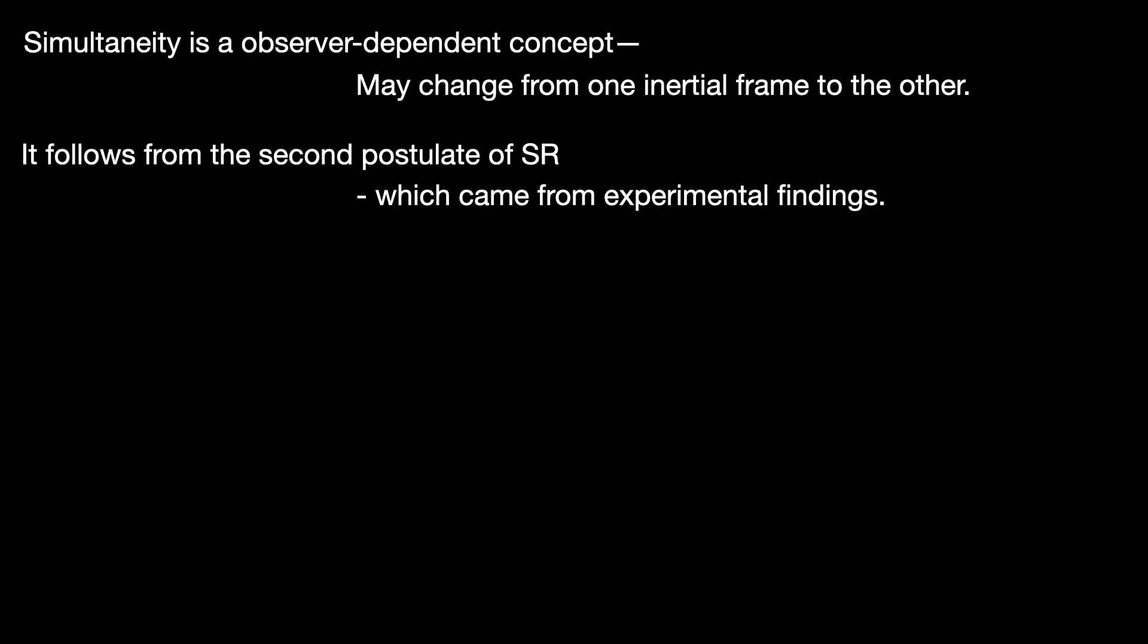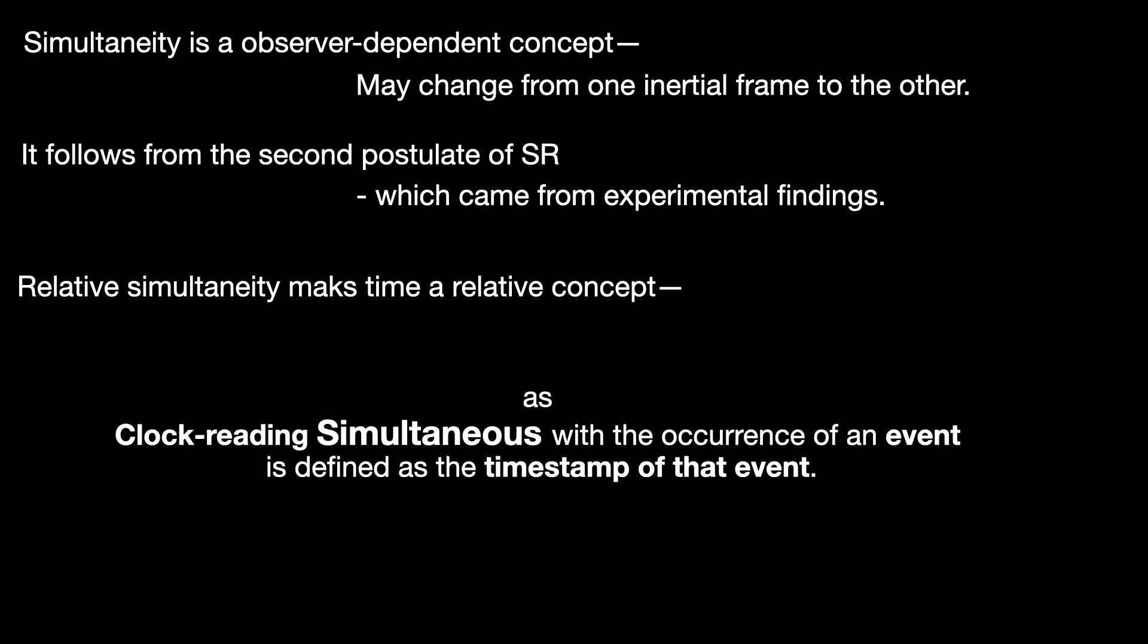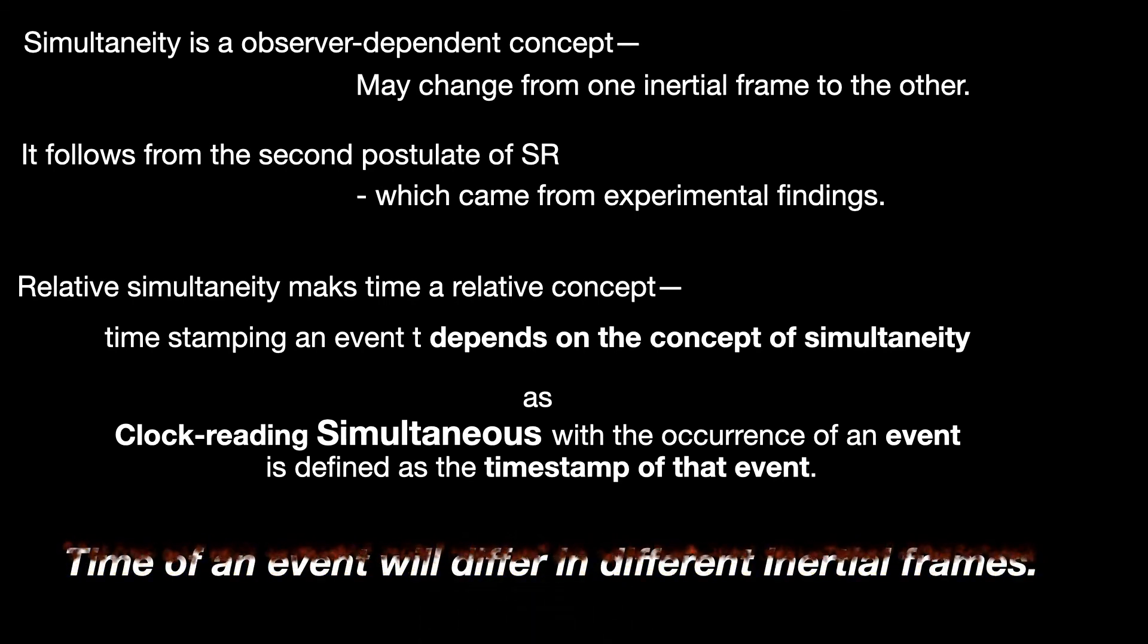Okay, but how does this hamper our belief that time is absolute, that is it runs the same for observers in different inertial frames? It turns out that the relative nature of simultaneity also makes time a relative concept, because the observer's clock reading that is simultaneous with the occurrence of an event is assigned as the timestamp of that event. Thus you see that assigning time to an event completely depends on the concept of simultaneity, and hence time of an event can differ for observers in different inertial frames, and we must let go of this idea of an absolute time for all inertial observers.